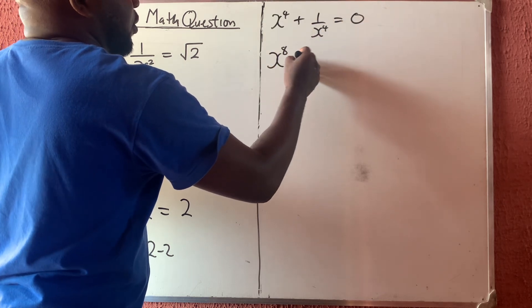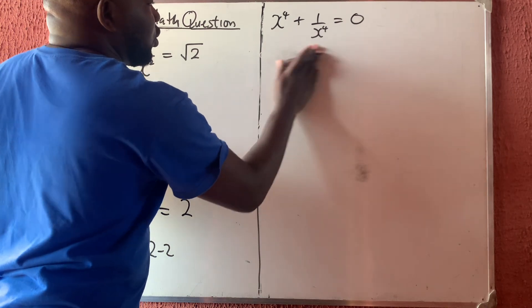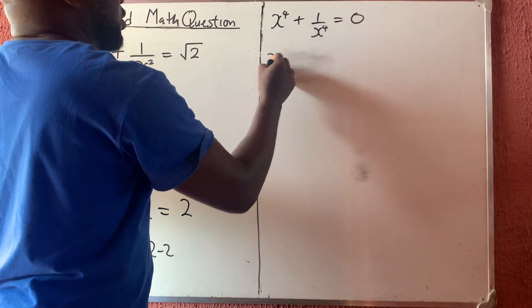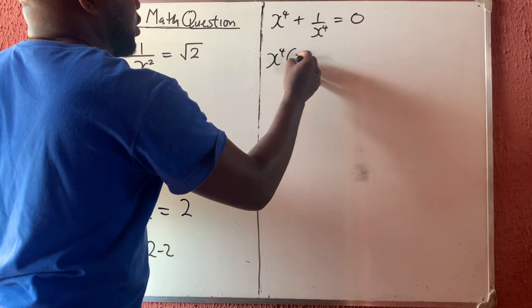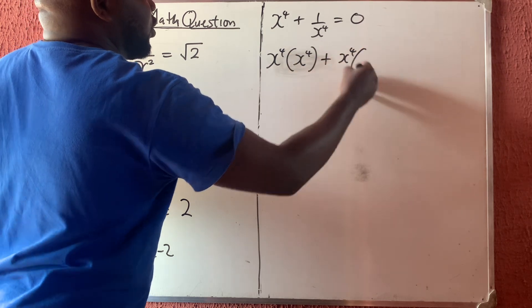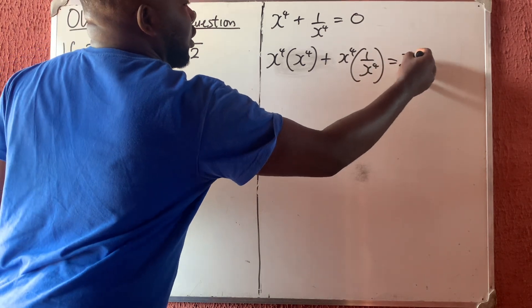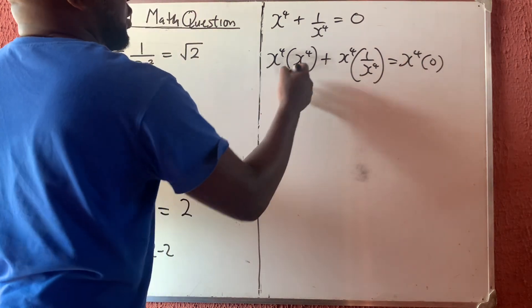Let me show you the way to make sense to you. This is x to the power 4 into x to the power 4, plus x to the power 4 into 1 over x to the power 4 is equal to what? x to the power 4 into 0.